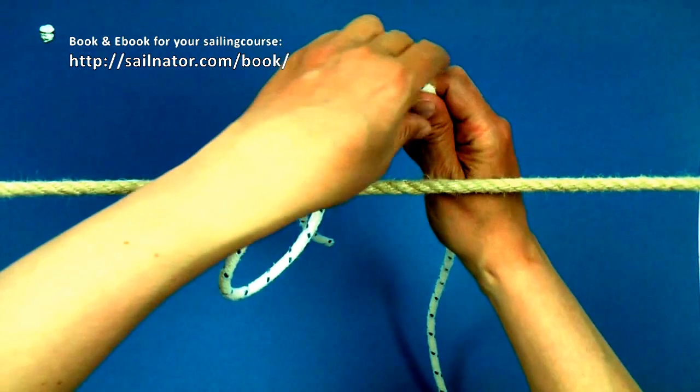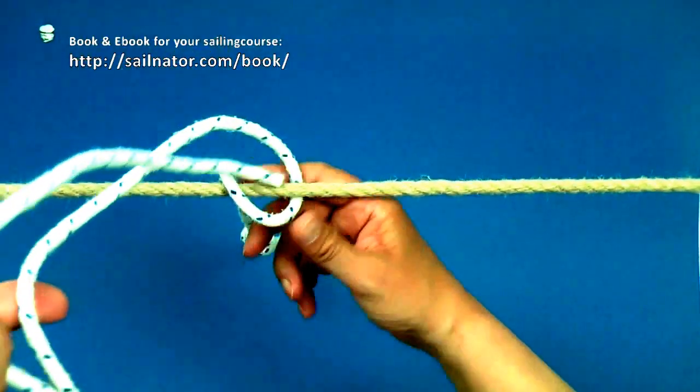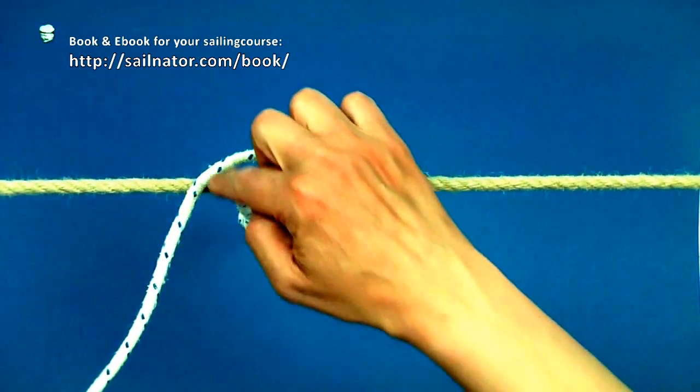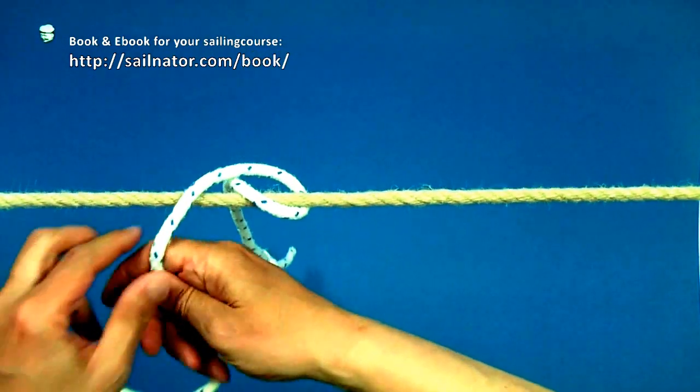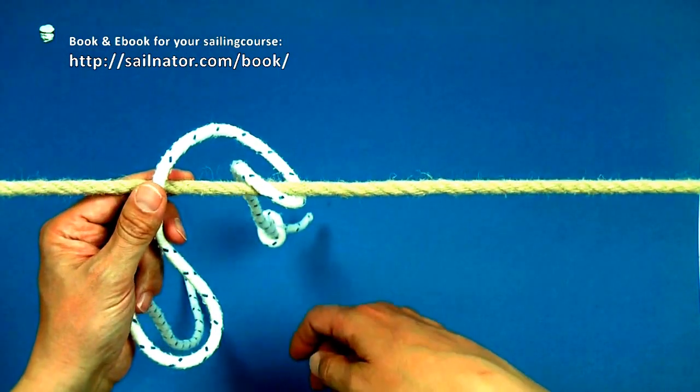Now I grab the end of the line with my left hand from above and take it to my side of the railing by crossing the line that is hanging downwards. By doing this I leave a loop on the railing that I secure with the left hand.